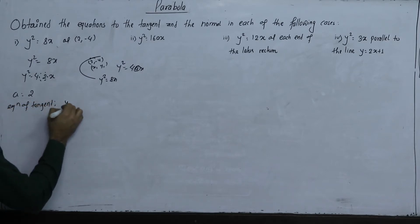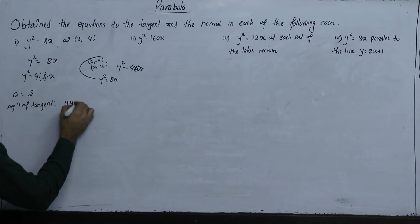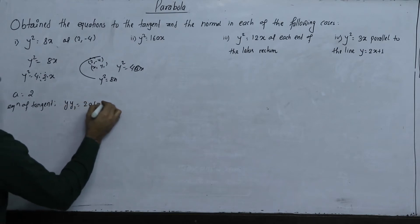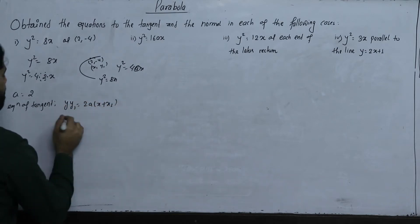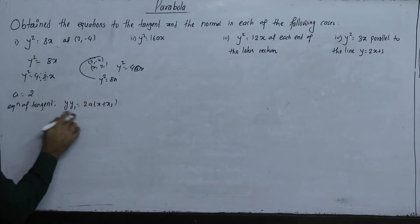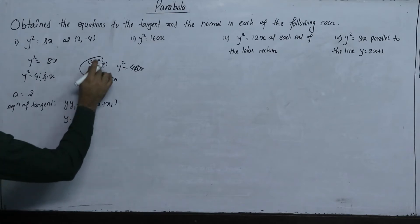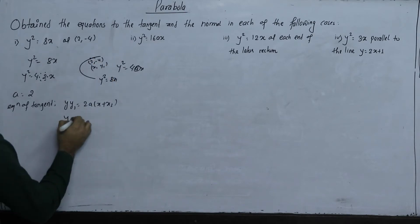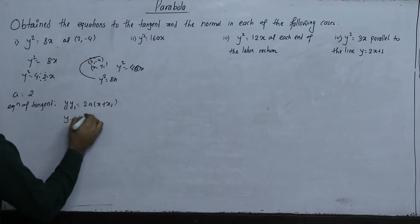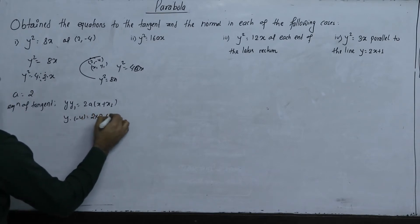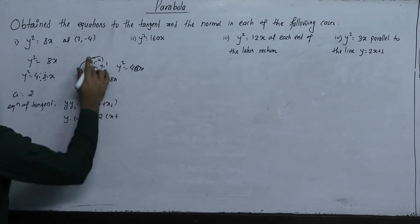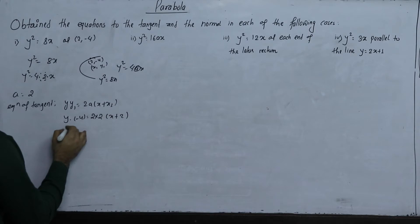Y·Y1 equals 2A times X plus X1. Y into Y1 minus 4, 2 into A. A1 equals 2. X plus X1 equals 2, Y1 equals 2.